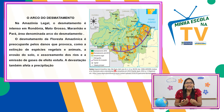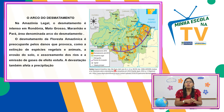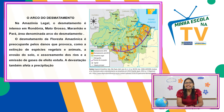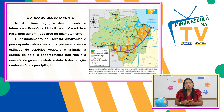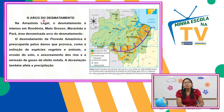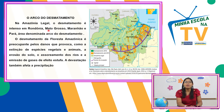Falando do desmatamento, trouxe essa ilustração do livro didático de vocês. Essa parte roxa é chamada o 'arco do desmatamento' — onde está concentrado o maior número de floresta desmatada. São justamente as áreas onde a gente encontra o crescimento urbano. O arco é bem intenso e vai estar presente em Rondônia, Mato Grosso, Maranhão e Pará. Toda essa área representada é chamada o arco do desmatamento.